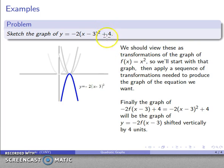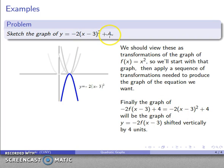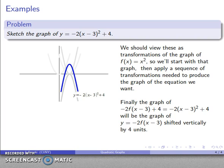Finally, I add 4. So -2·f(x - 3) + 4 = -2(x - 3)² + 4, which is exactly what we're looking for. Adding 4 shifts the graph vertically up by 4 units, and there's my final graph.